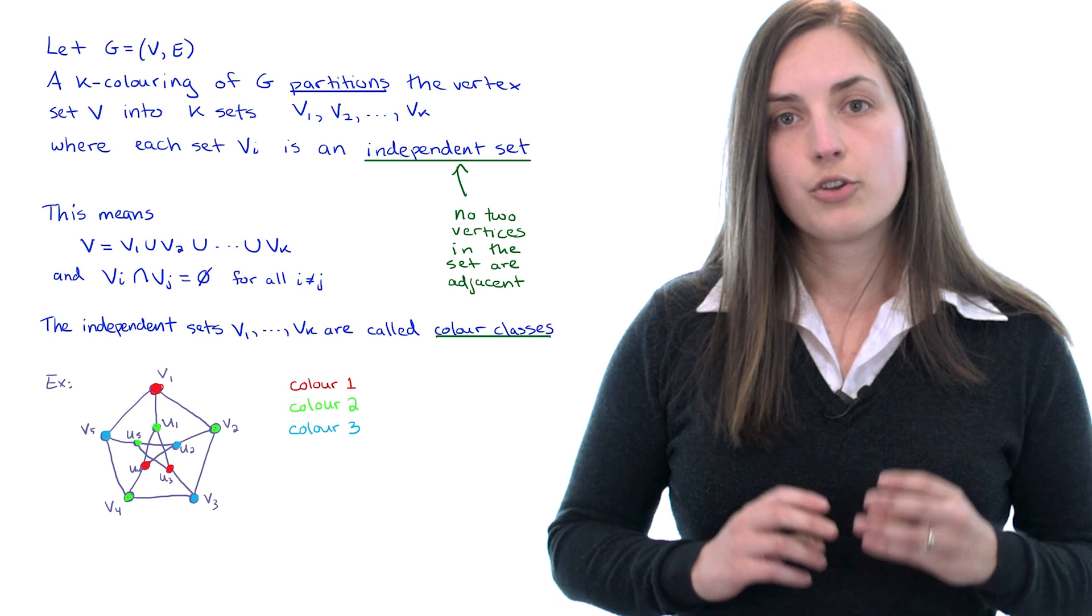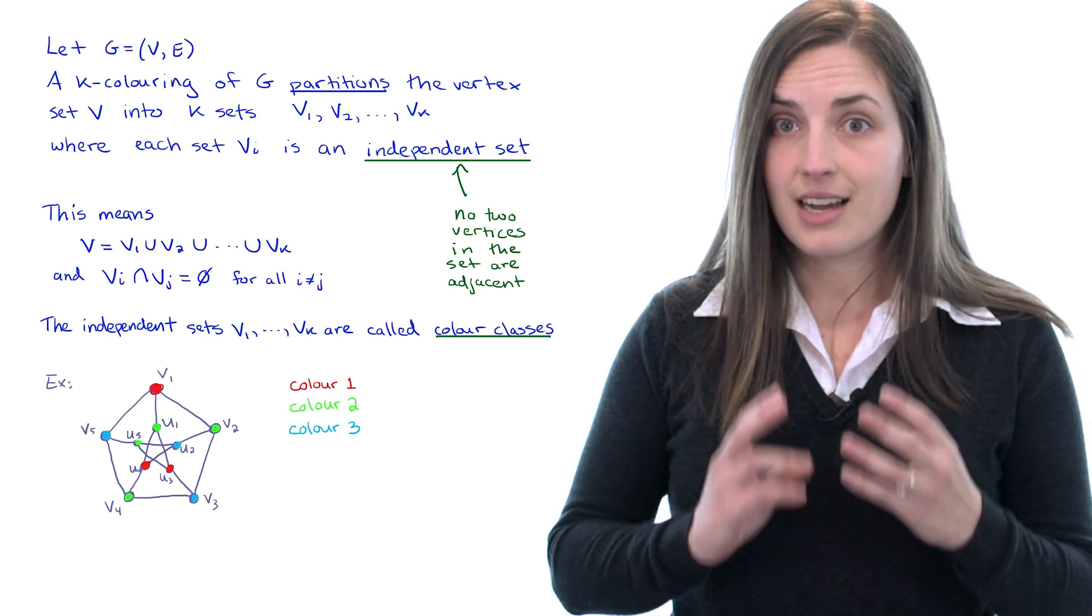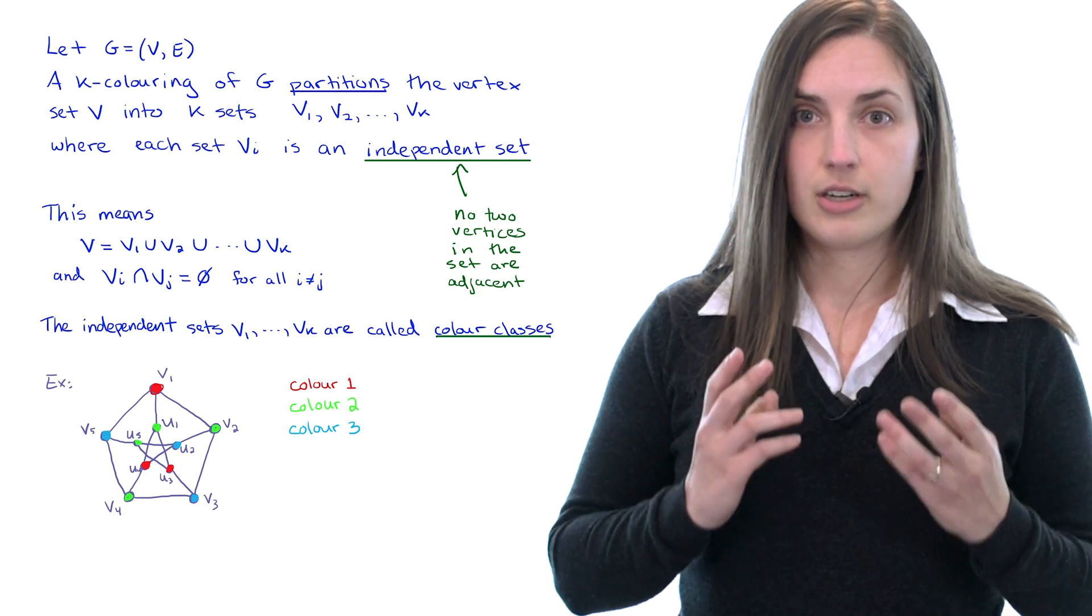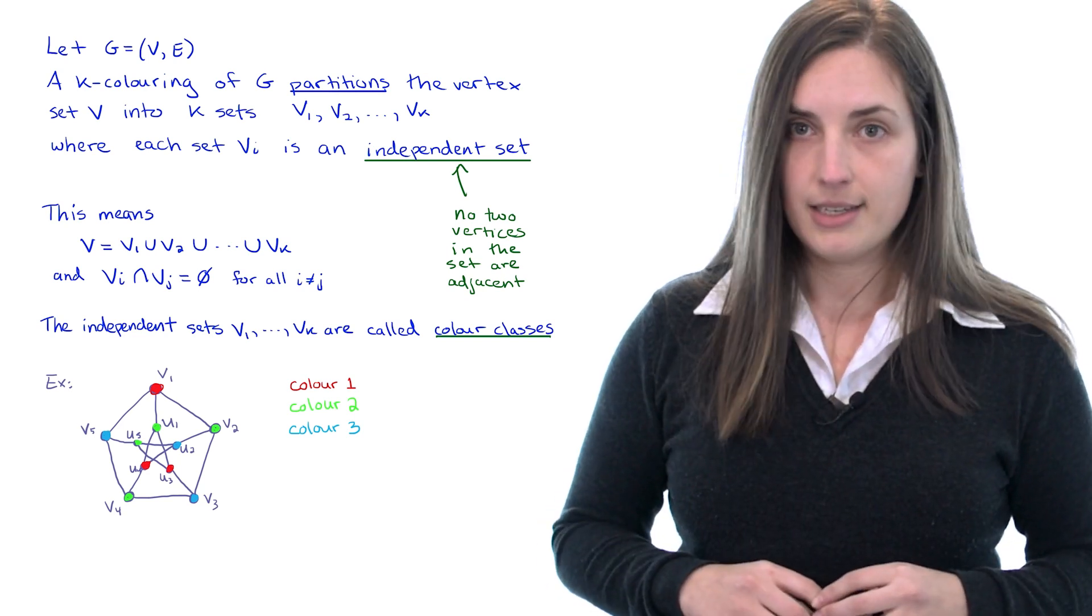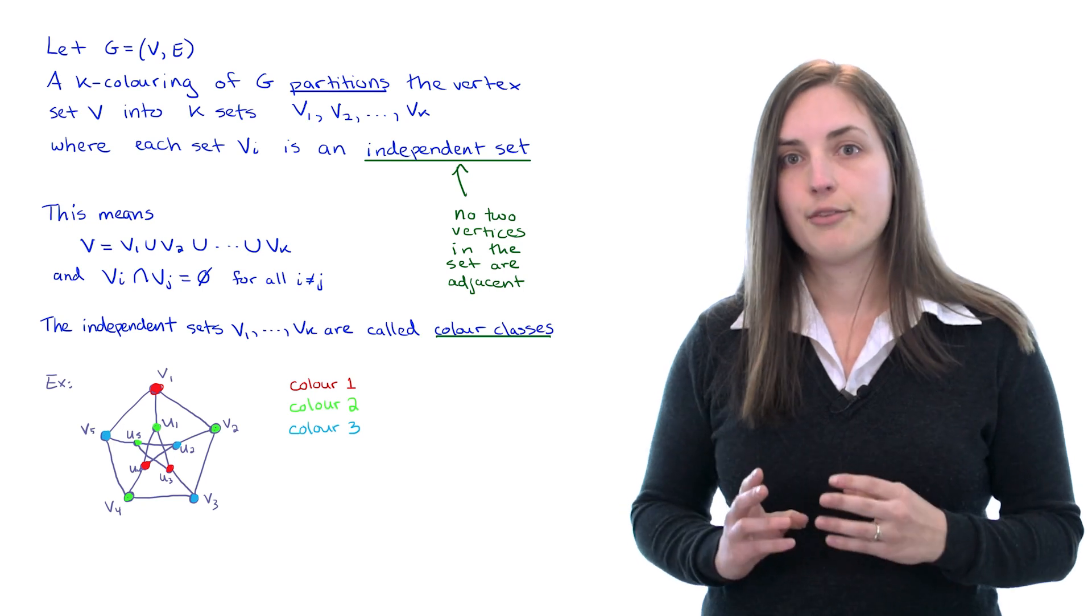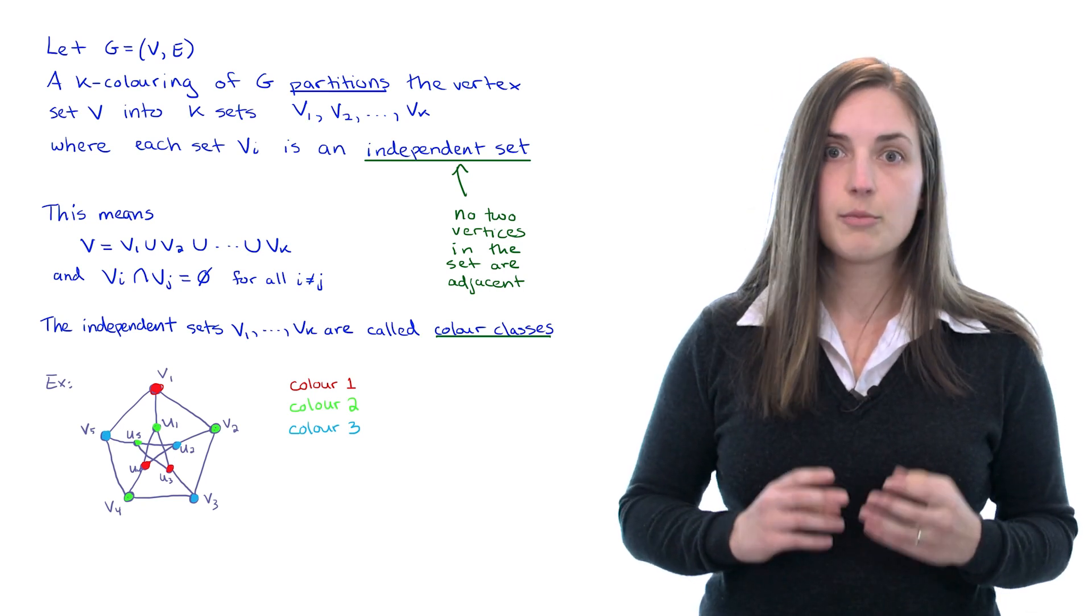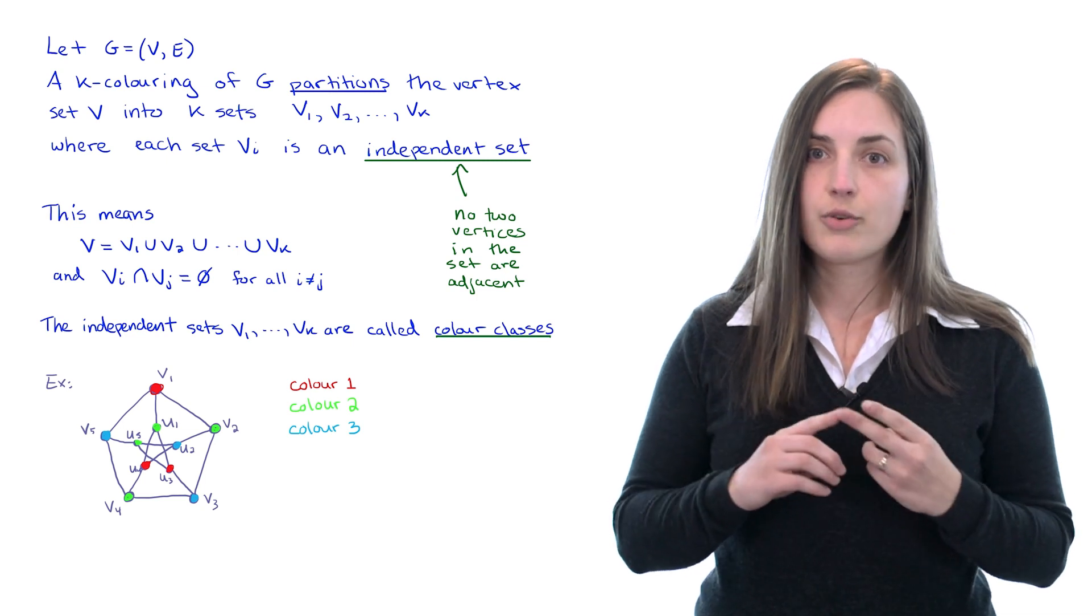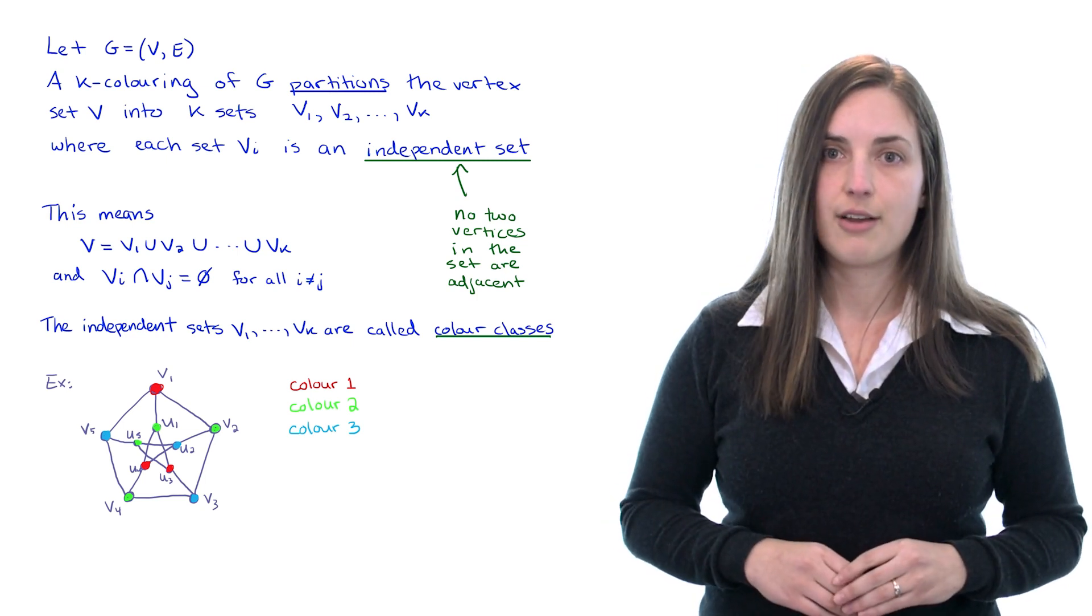you'll notice that of course because this is a proper vertex coloring no two red vertices are adjacent. So the red set forms an independent set. Similarly the green set forms an independent set and the blue set forms an independent set. And of course the red, the green, and the blue sets partition the vertices of the graph.